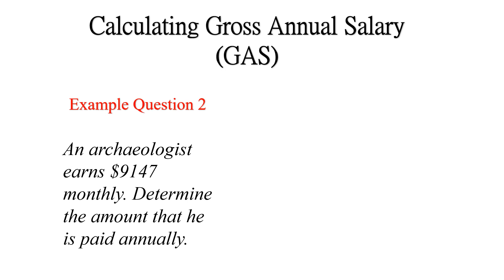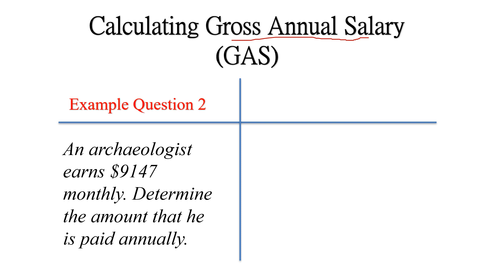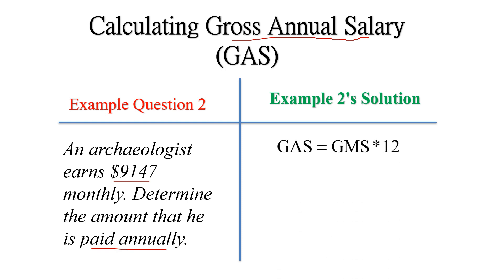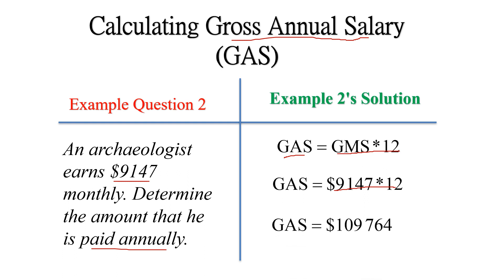We have another example question on calculating gross annual salary. An archaeologist earns $9,147 monthly; determine the amount he is paid annually. Now we are going from gross monthly to gross annual. GAS = GMS × 12, so $9,147 × 12 = $109,764 annually. That is the annual income for the archaeologist.